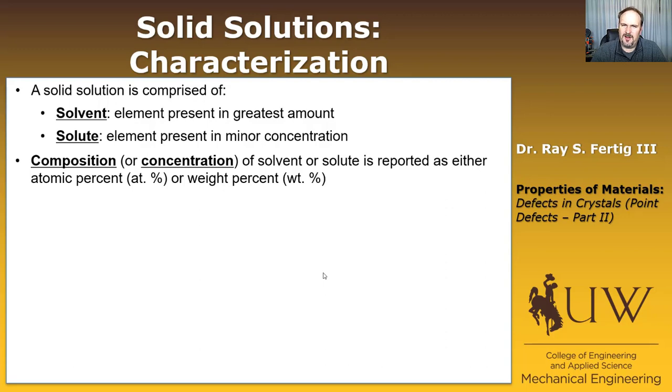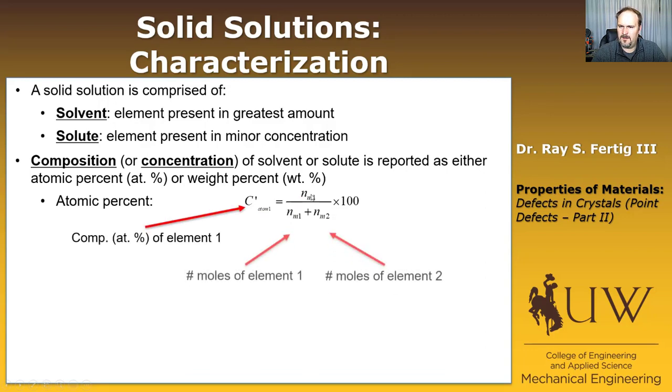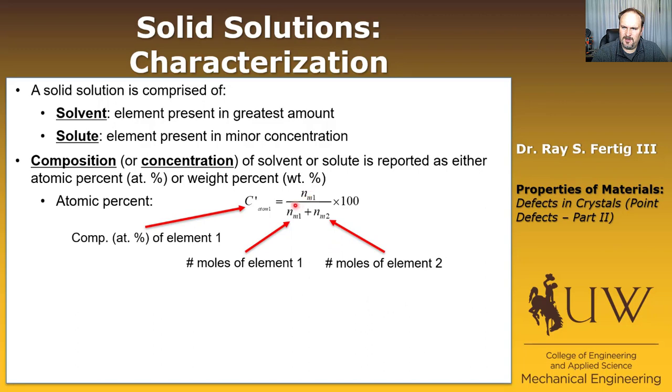We're going to need to find a way to label the makeup of this solution, and so we introduce the idea of composition or concentration. They're synonyms. We want to know how much percent of the solvent or solute is going to be in there, and we report that as either an atomic percent—what's the percentage of atoms—versus a weight percent. So in the case of an atomic percent, we're going to denote that—your book denotes it with an apostrophe by the concentration. I'm subscripting this atom one just for this time so you can see what's happening. This is the atomic concentration of atom one in the solid solution. All it is is the number of moles of element one divided by the sum of the moles of element one plus the moles of element two, of course, times 100 to get a percentage. Pretty easy.